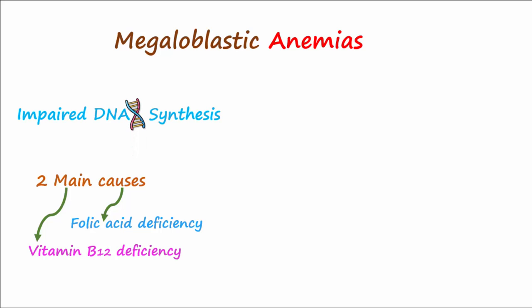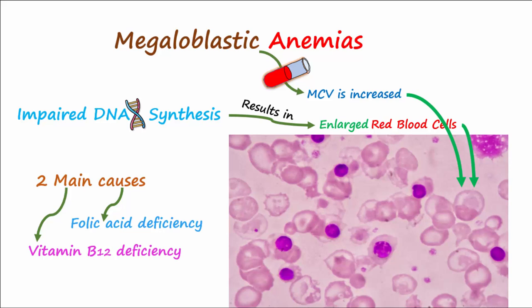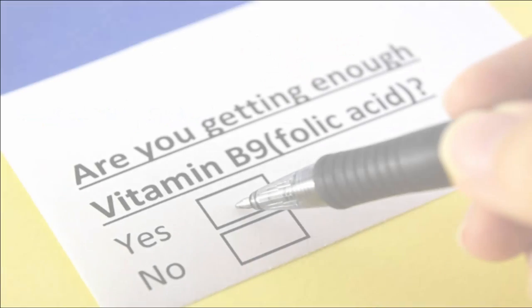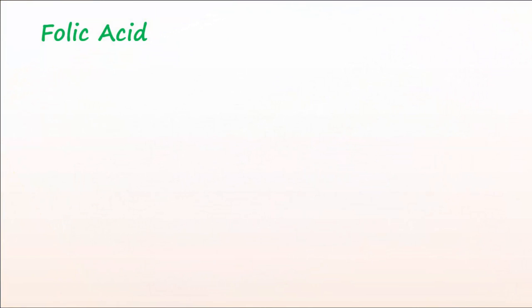Megaloblastic anemias come about due to impaired DNA synthesis that results in enlarged erythrocytes. It's important to remember that with megaloblastic anemias, lab results will show that the MCV, or mean corpuscular volume, of the red blood cells is increased, and the mean corpuscular hemoglobin content, or MCHC, is normal.